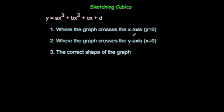One is to find out where the graph crosses the x-axis, so you let y equals zero. Find out where the graph crosses the y-axis, so you let x equals zero. And then you need to figure out the correct shape of the graph and then you just sketch it.